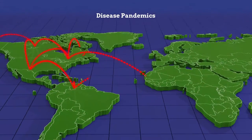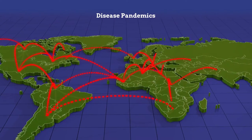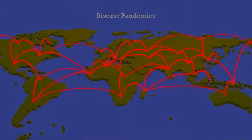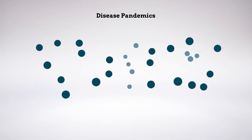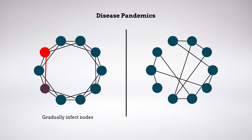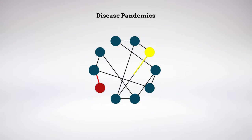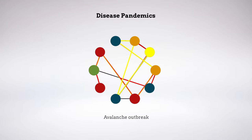Certain disease pandemics arise when a population weakened by one illness becomes more susceptible to another. Researchers examined how the shape of a network determines whether two cooperating pathogens gradually infect nodes or spread violently through an abrupt and massive outbreak. In networks where the pathogens spread across long distances before converging on the same node, the spread of the two pathogens could wane before suddenly entering a runaway avalanche outbreak phase. The hallmark of this phase was the infection of a sizable fraction of the entire network after either infection alone would have died out.